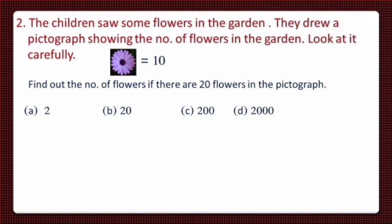This is the question and you have to solve it. A scale is given and the 4 options are option A is 2, option B is 20, option C is 200 and option D is 2000. In this pictograph, the scale is 1 flower is equal to 10 flowers and the children have drawn 20 such flowers in the pictograph.